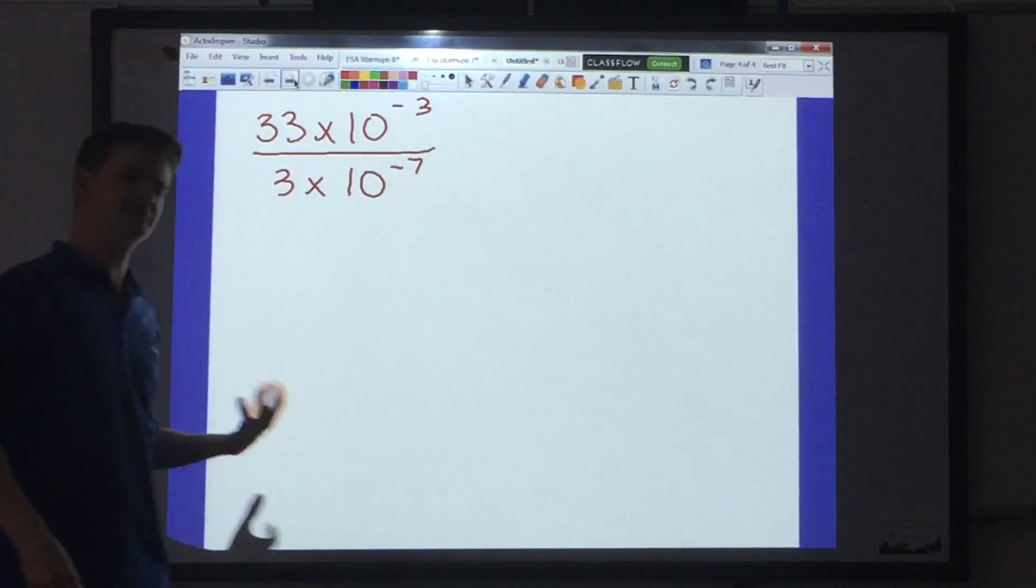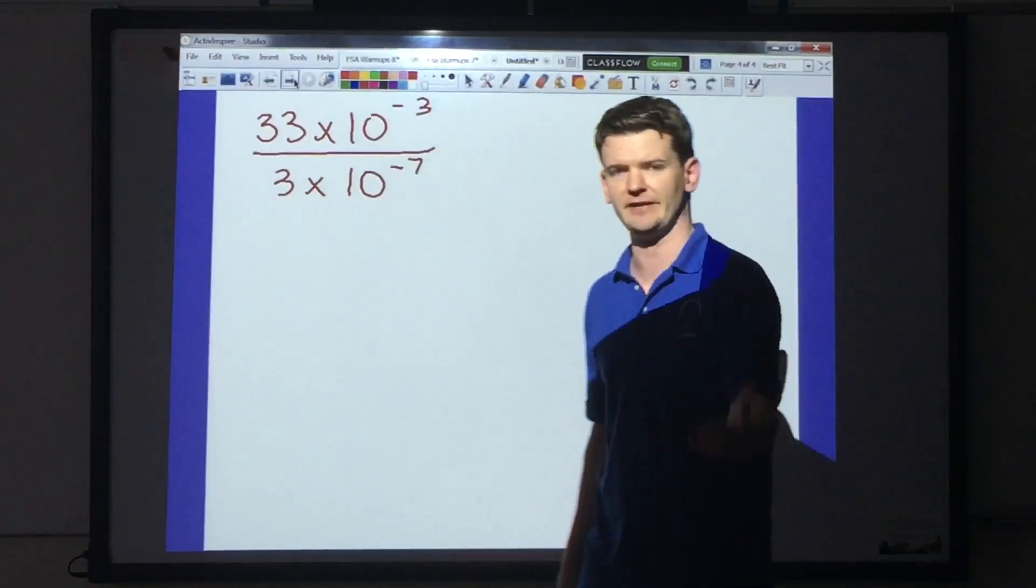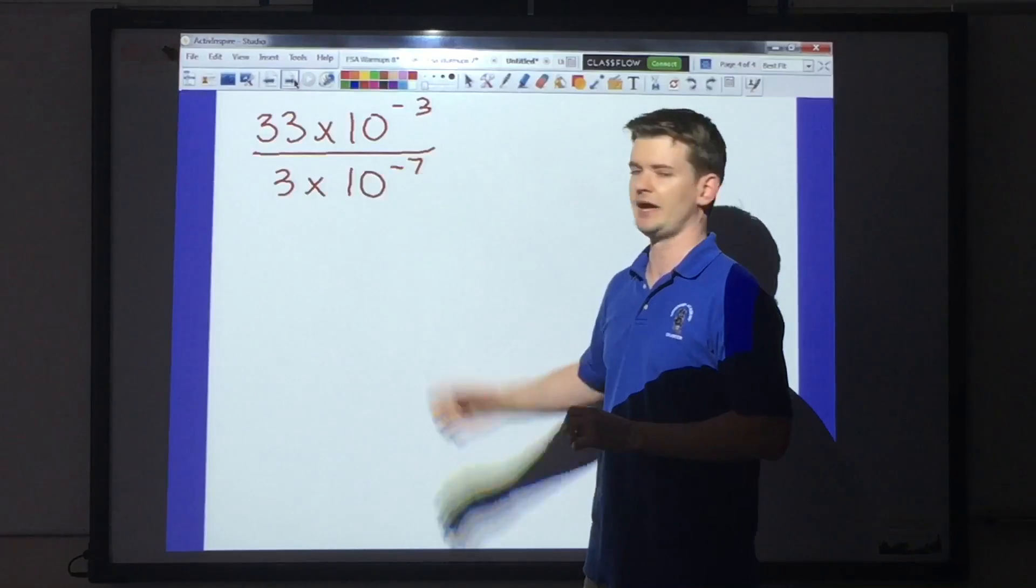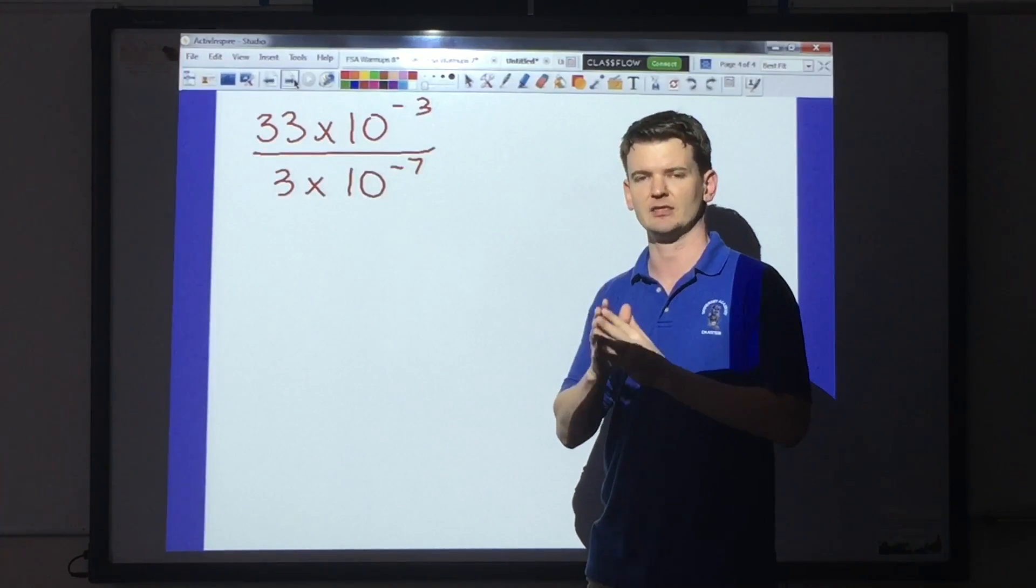Here we have 33 times 10 to the negative third. Negative exponent. Don't be afraid. Pretty easy to deal with. Divided by 3 times 10 to the negative seventh power.